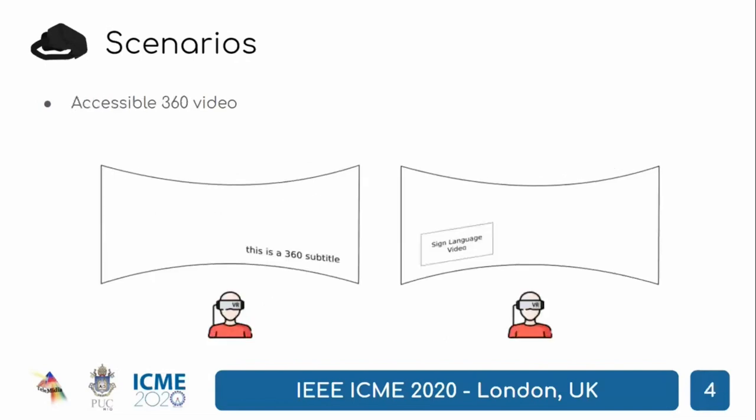The second scenario, Accessible 360 Video, aims at presenting together with a 360 video its translation in either sign language or subtitles. For the sign language case, a 2D regular video using picture-in-picture could be displayed.